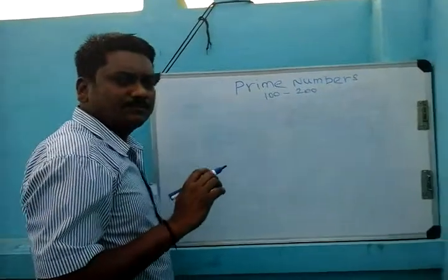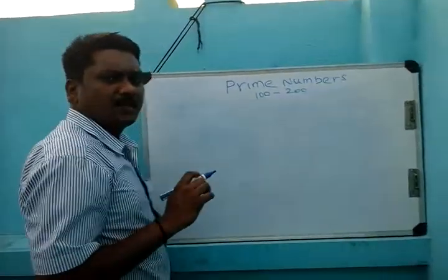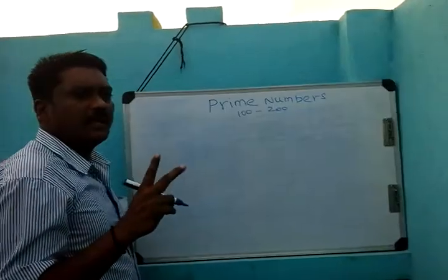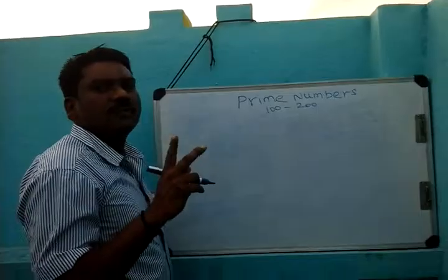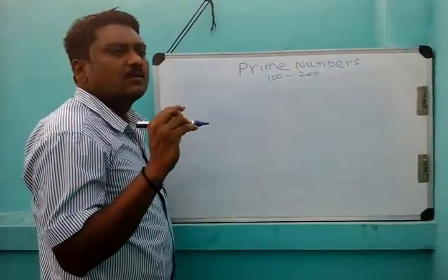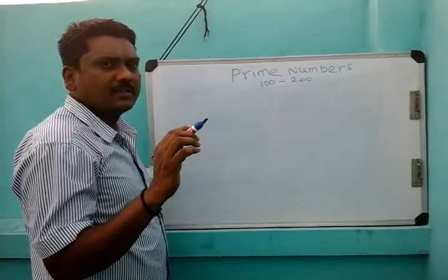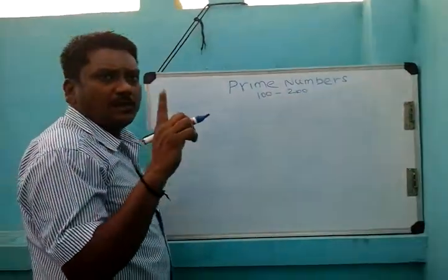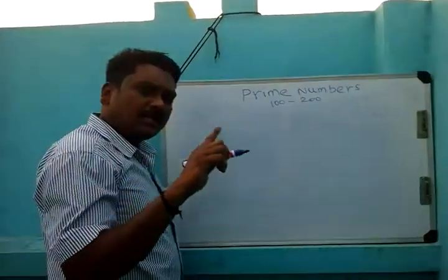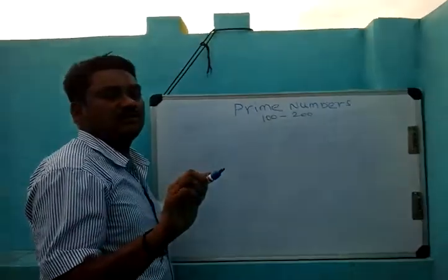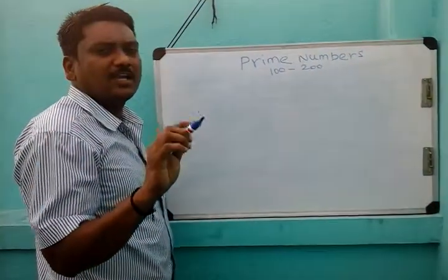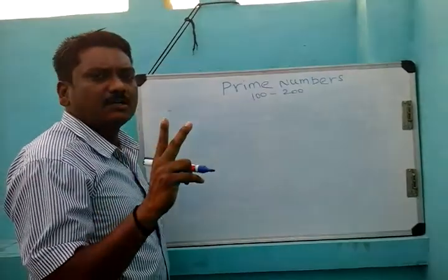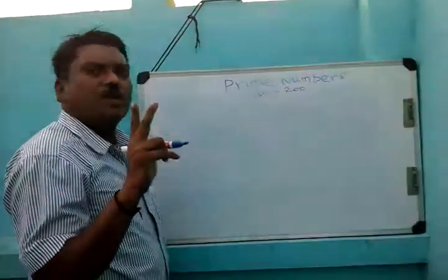Let's talk about prime numbers. A prime number has only two factors — one and the number itself. If you ask whether a number has exactly two factors, that number is a prime number.